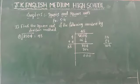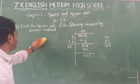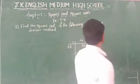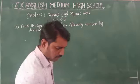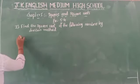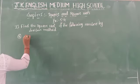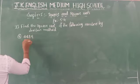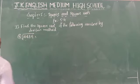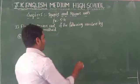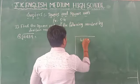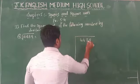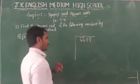Now shall we go to question number 2? Question number 2 is 4489. What is the first step? Make the groups. Write the number 4489 and form the groups: the first group is 89 and the second group is 44.